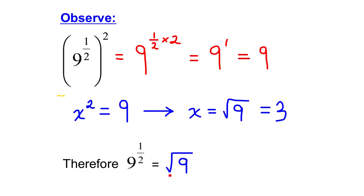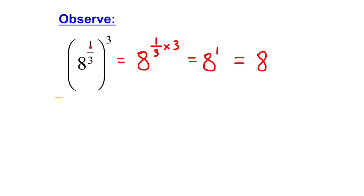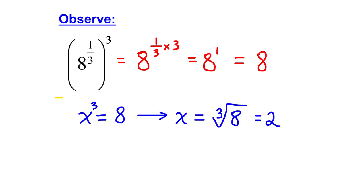Keep this in the back of your mind as I show you another thing. 8 to the exponent 1 over 3 cubed. Simplify this power by multiplying the exponents. The answer is 8. In the warm-up, I had x cubed equals 8. I solved for x by taking the cubed root of 8, which was 2 as the answer, because 2 cubed is 8. So, x is equal to the cubed root of 8. Now, something cubed is equal to 8. The answer is 2. This cubed is 8, so this must also equal 2. So, 8 to the exponent 1 over 3 is equal to the cubed root of 8.